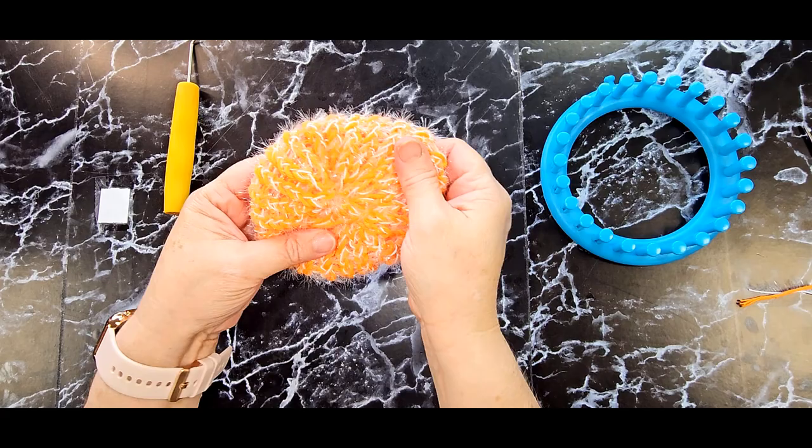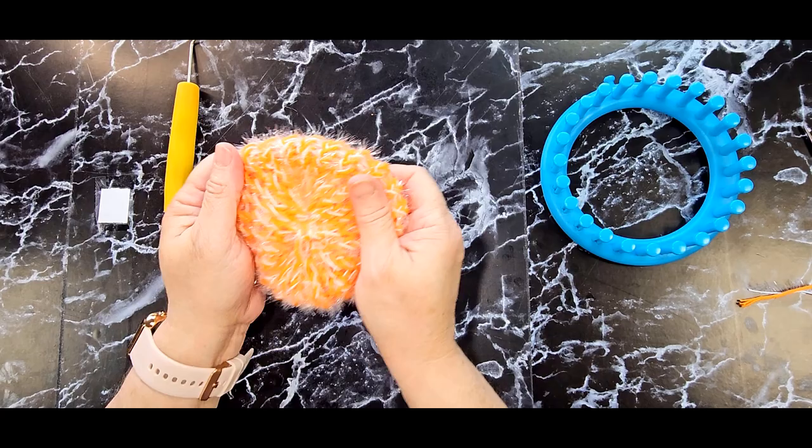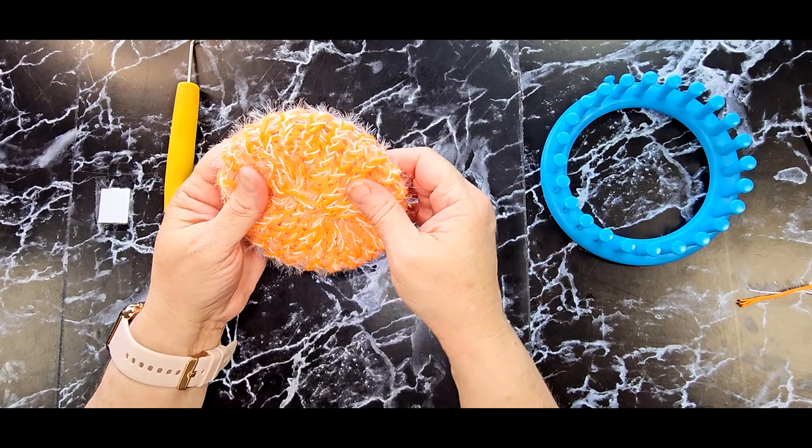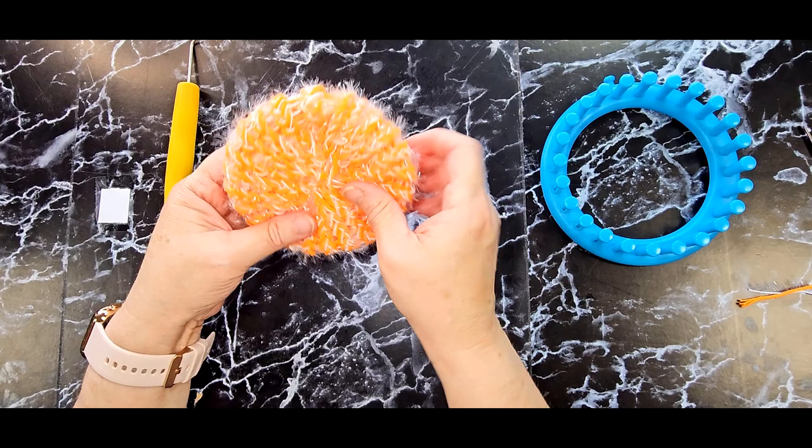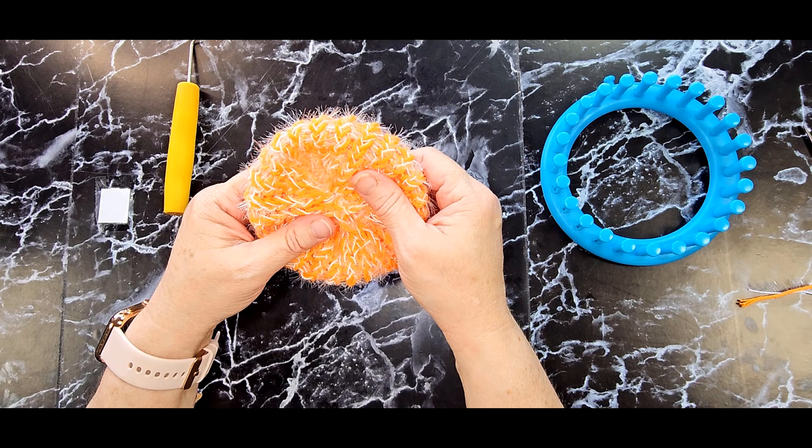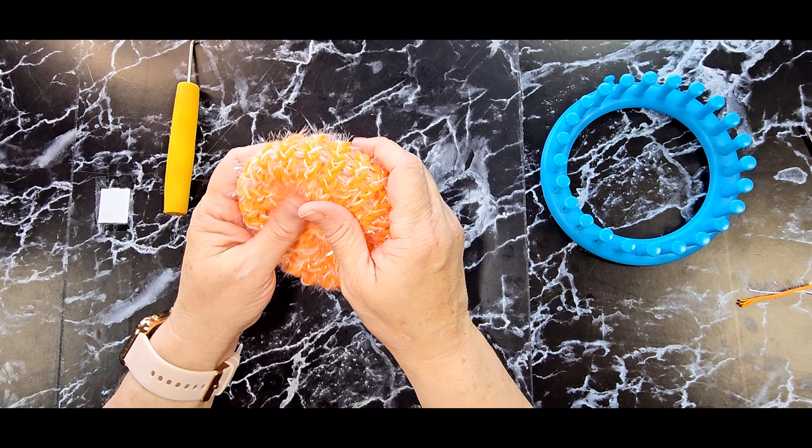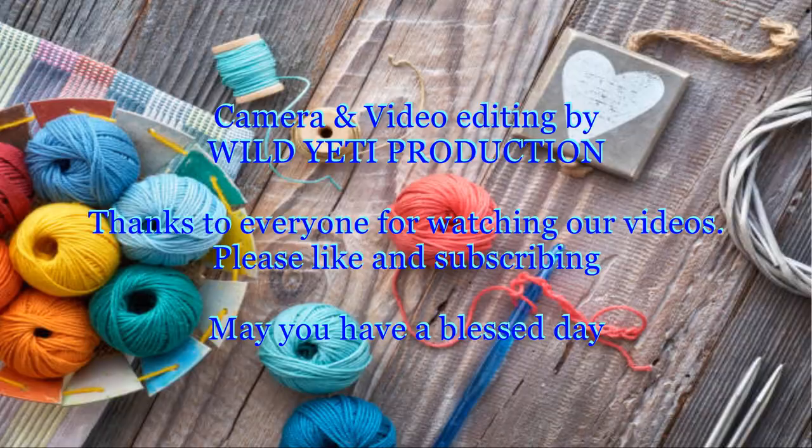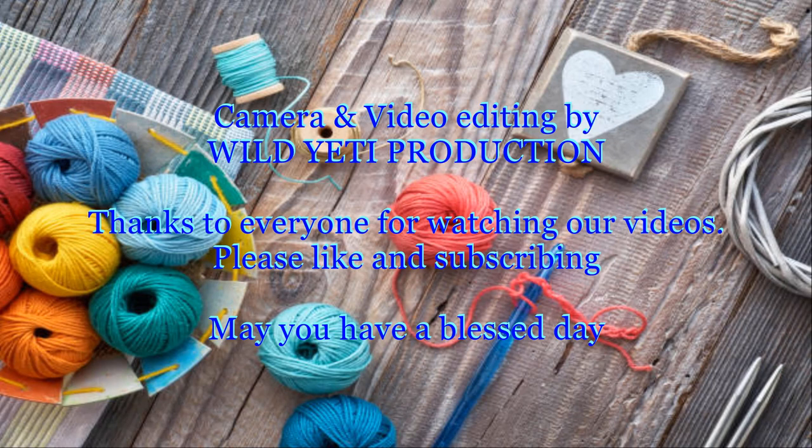And you're done. That was so fast and easy. And these really do a great job scrubbing your dishes. The hard to get off stuff. I think you're going to love it. I think you're going to enjoy making these. If you do, please send me pictures. I'd love to see it. Please like this video if you found value in it. And if you haven't subscribed, please do so. We would love to have you on board. And we do loom knitting, crochet, cooking, photography, and maybe some other stuff sprinkled in there. So until the next video, God bless.